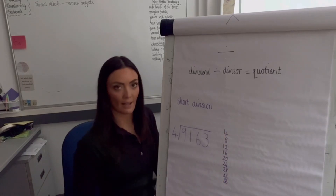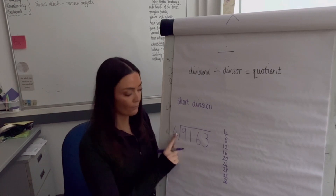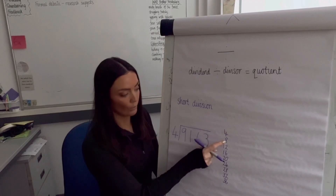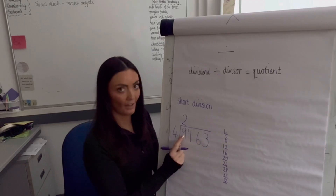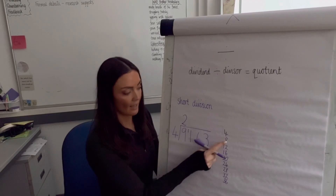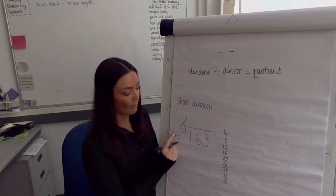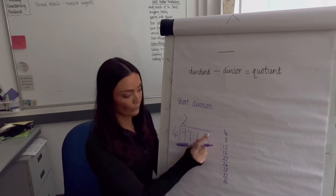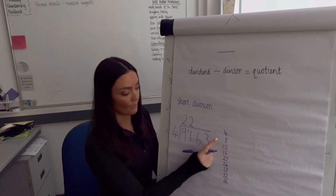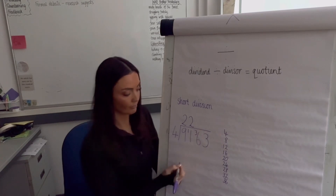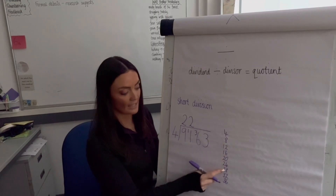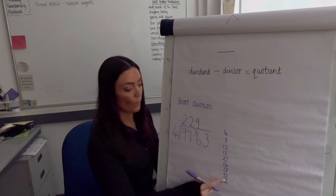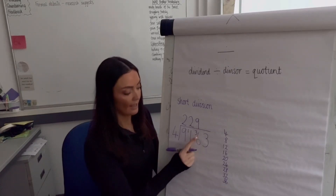How many equal groups of 4 are in 9? Counting down: 1×4=4, 2×4=8 — 12 would be too much. So 2 whole groups making 8, remainder 1 (difference between 8 and 9). How many groups of 4 in 11? Again 2, remainder 3 (difference between 8 and 11). How many groups of 4 in 36? Nine whole groups, zero remainder — 36 is a multiple of 4.